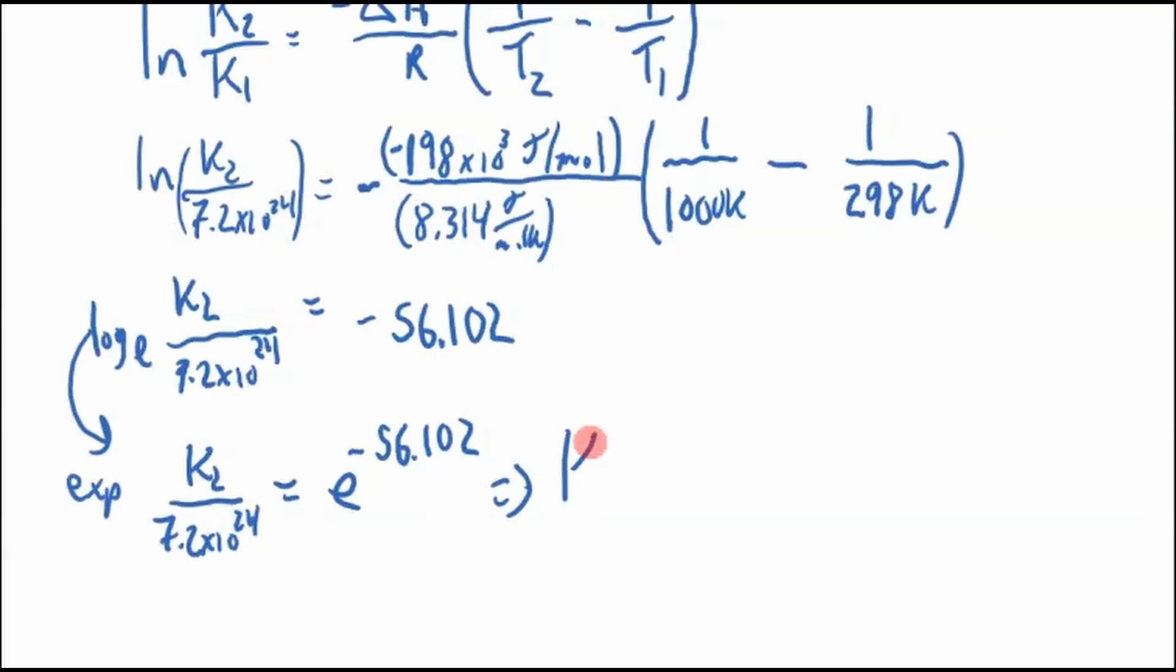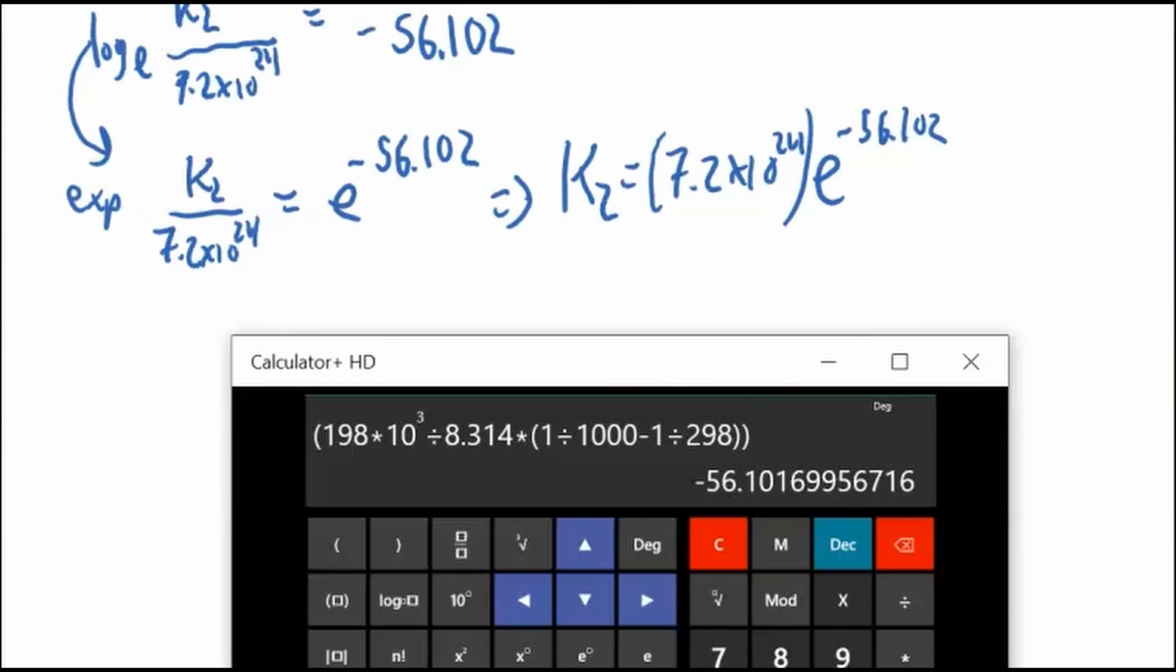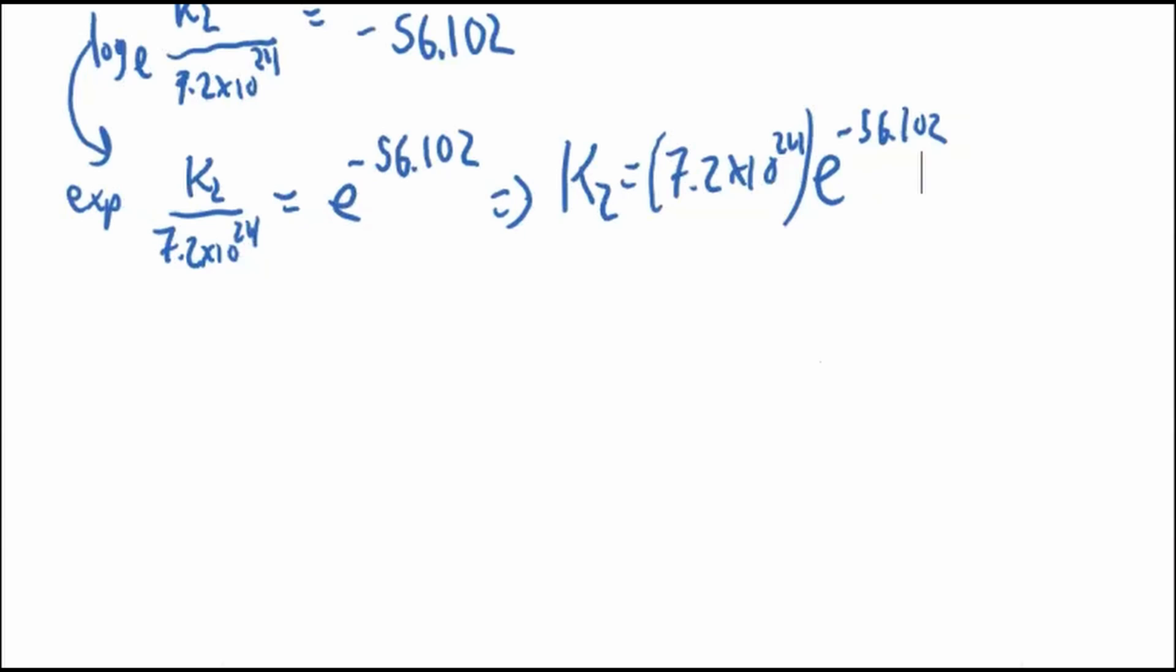If we want to solve for K2, K2 equals 7.2 times 10^24 times e^(-56.102). Plug that into our calculator. 7.2 times 10^24 times e^(-56.102), and I think that looks good. Not a very big number anymore. 3.108.